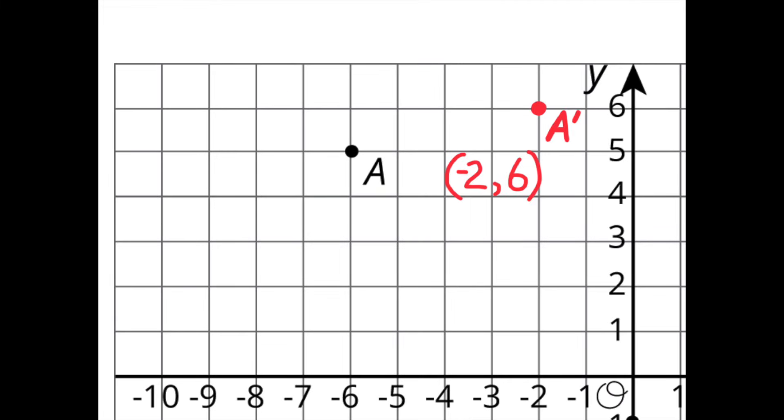Here's point A' located 4 units to the right and 1 unit up from the original point A. The coordinates for point A' are negative 2 and 6.